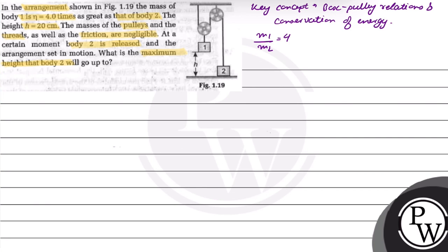Since these all are connected through strings, tension T will be acting on box 2, and tension 2T will be acting on box 1.